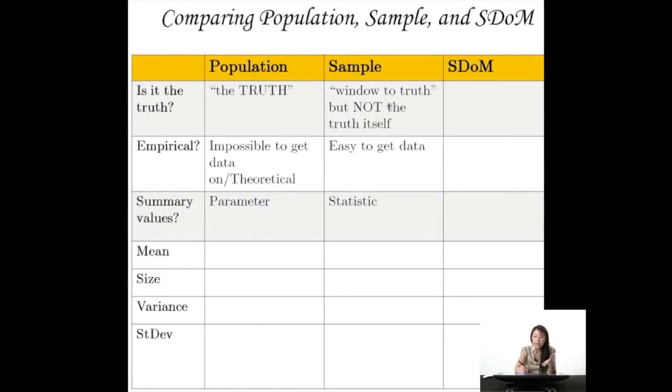And in the same way, the samples are not the truth, and we're not really interested in samples, but we're using the sample as a window to the truth, right? What's nice about the sample is that, unlike the population, it's empirical. We could actually go out there and get data on it. And the summary values are called statistics.